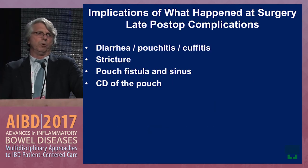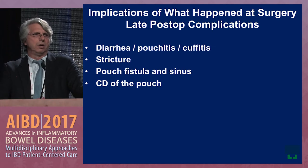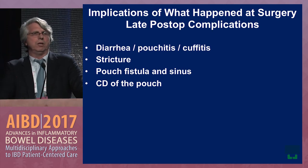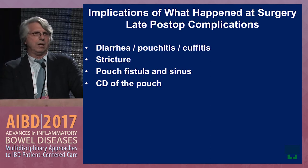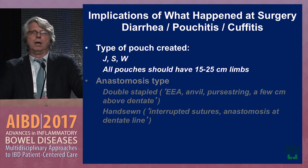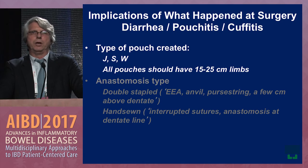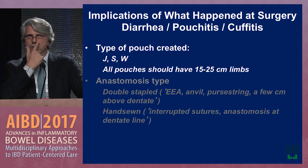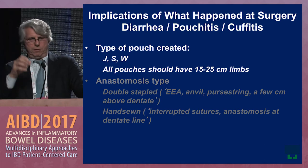Late post-op complications include diarrhea, pouchitis, cuffitis, strictures, pouch fistulas and sinuses, and Crohn's disease of the pouch. One of the most important things to identify in an op report is the type of pouch created. You'll hear letters like J, S, and W — the J and S are most common. All pouches have approximately a 15 to 25 centimeter limb.